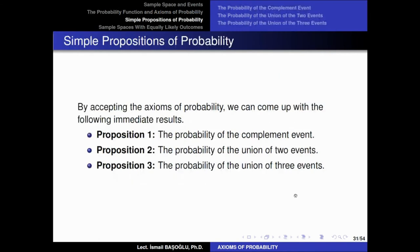So these were the axioms of probability that we have covered. It is important for you to memorize these axioms, because we are going to continue with the propositions of probability, most of which can be proven using these axioms. The axioms will be helpful for developing such propositions, and these propositions are going to help us calculate many probability problems.